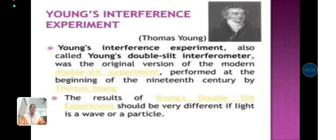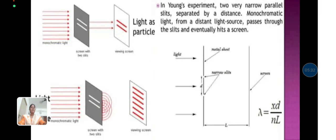The result of Young's double slit experiment should be very different if light is a wave or a particle. In Young's experiment, two very narrow parallel slits separated by a distance. Monochromatic light from a distant light source passes through the slits and eventually hits a screen. The wavelength of the particular particle is written as xd divided by nl.